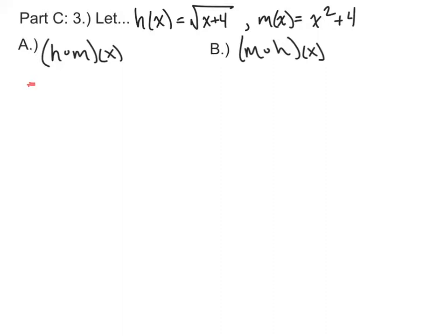What I always do first is rewrite that as h of m of x. That helps me to see that I'm going to take m of x and plug it into h. So that would be h of the x squared plus 4.